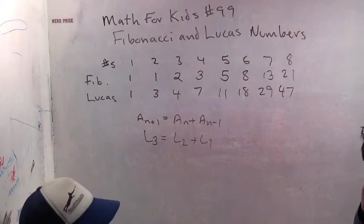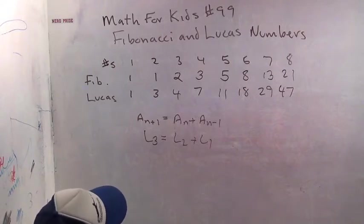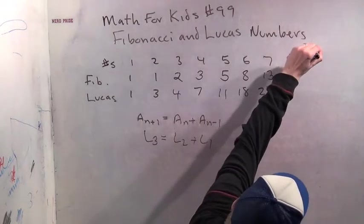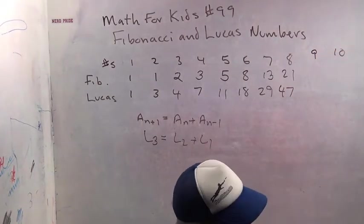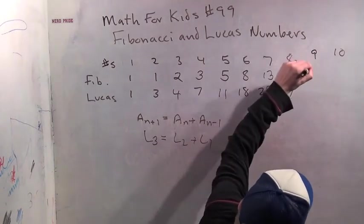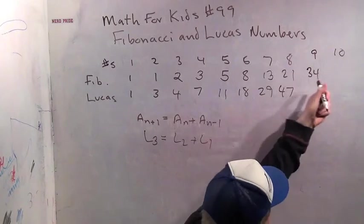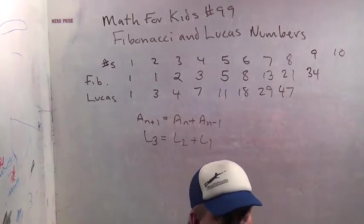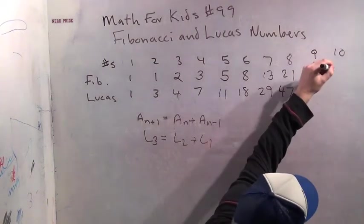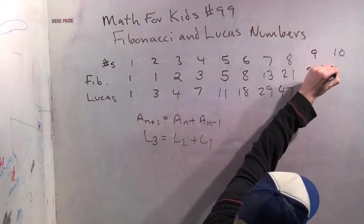So now you might say, I wonder why people study Lucas numbers. Let's go to numbers 9 and 10, because I think we'll stay on camera. So 13 plus 21 is? 13 plus 21 is 34. And 21 plus 34 is? 21 plus 34. That's going to be 55. Very good.